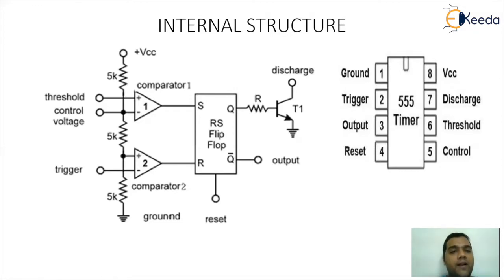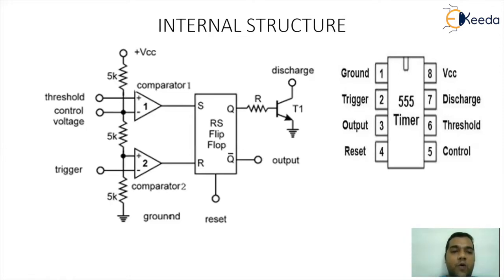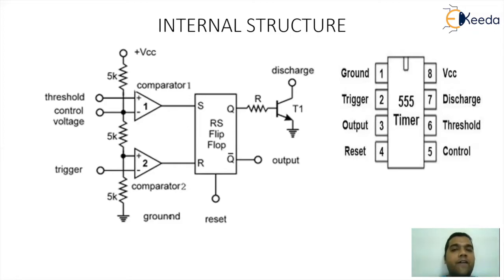Now going for the upper comparator — again there are two input pins, plus and minus. The plus pin is connected to the threshold and the minus pin is directly attached to the reference point. Since there are two 5 kilo ohm resistors, the voltage drop across each is 1/3 VCC, and when I add the two drops, the total value becomes 2/3 VCC. So for the upper comparator, the reference control voltage corresponds to 2/3 VCC.